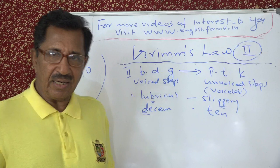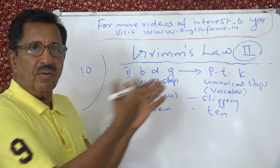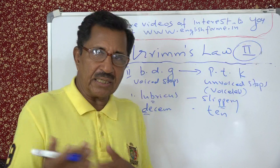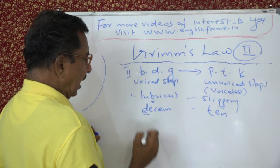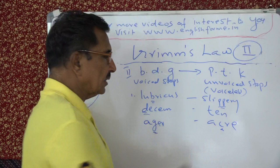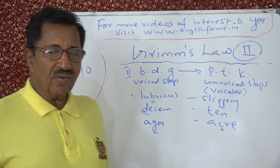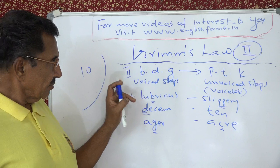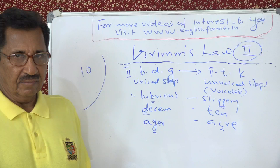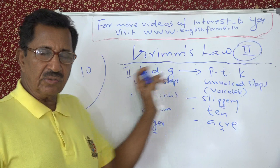This is comparative philology — comparing what happened to a sound in one language versus another language. The next example is Latin 'ager' and English 'acre'. 'Ager' means field. Instead of G you have K in English, pronounced 'acre'. So the correspondences are: B→P, D→T, and G→K — voiced plosives on one side, voiceless plosives on the other.